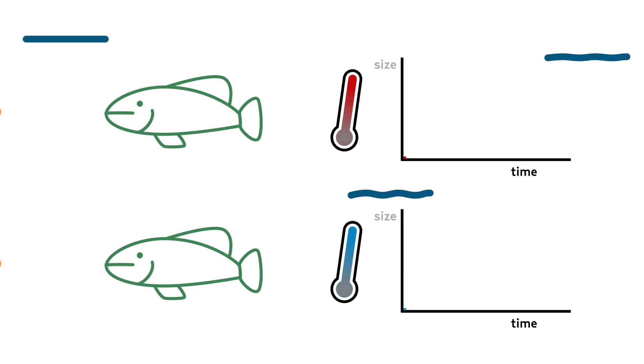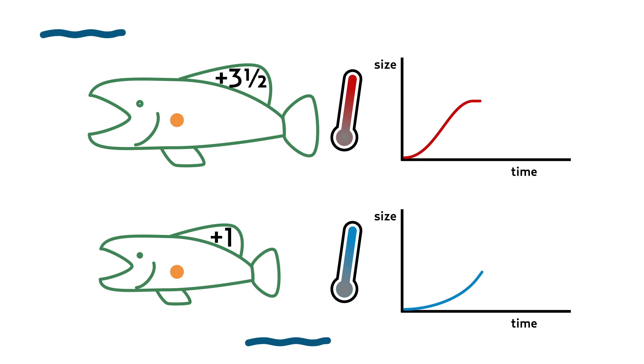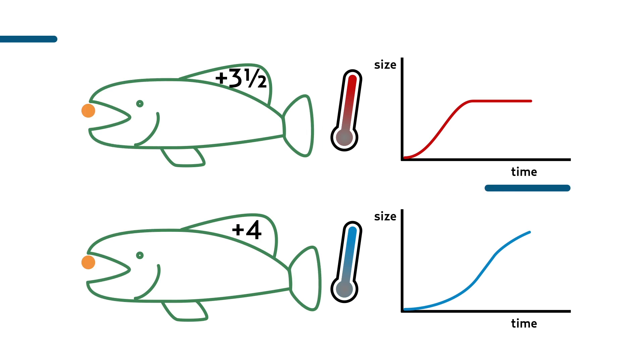However, temperature effects are different. Under warmer conditions, animals tend to grow faster, but they end up reaching adulthood at a smaller size.